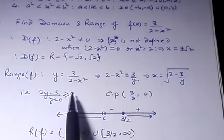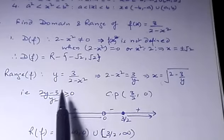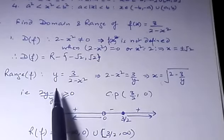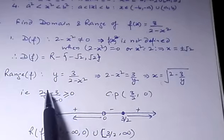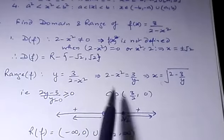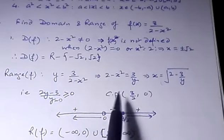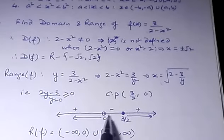Now what do we do? We find the critical points. For critical points, we equate the numerator and denominator to zero. So 2y - 3 = 0 gives y = 3/2. And y = 0 gives y = 0. So 0 and 3/2 are the critical points.